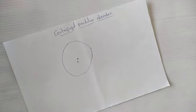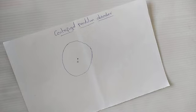In the last class we discussed the dynamic vibration absorber for a spring mass system. Today we will discuss the centrifugal pendulum absorber, which is an absorber for torsional vibration systems.